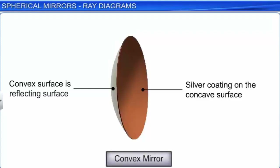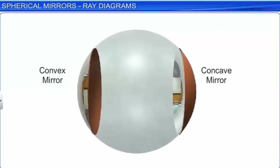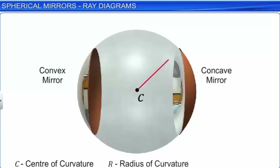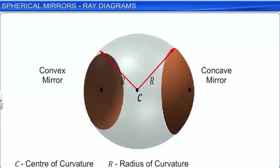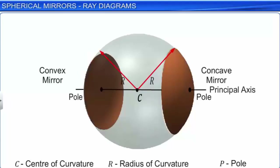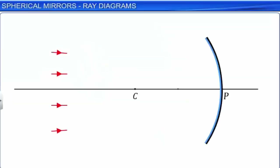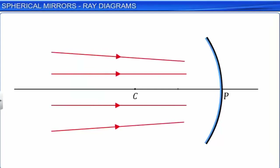Let us define certain terms relating to spherical mirrors. The center of the sphere of which the mirror is a part is called the center of curvature C, and the radius of the sphere is the radius of curvature R. The geometrical center of the spherical mirror is called its pole. The imaginary line passing through the pole and the center of curvature is called the principal axis. If rays of light from an object make small angles with the principal axis and are incident at points close to the pole, the rays are called paraxial rays.